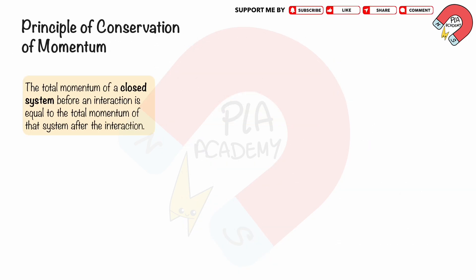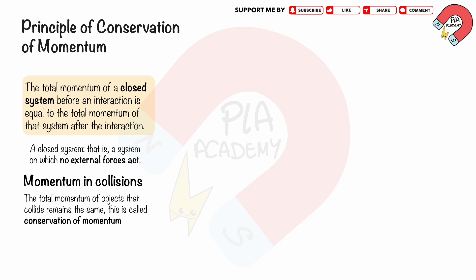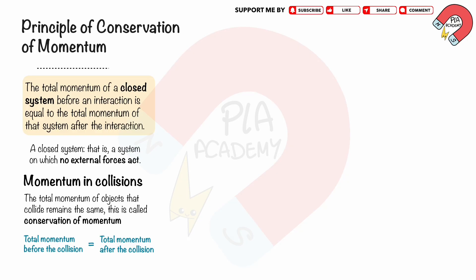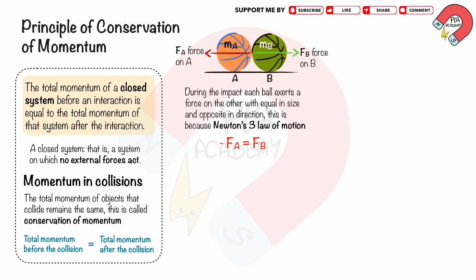The principle of conservation of momentum states that the total momentum of a closed system before an interaction is equal to the total momentum of that system after the interaction. A closed system is a system on which no external forces act. Momentum in collisions: the total momentum of objects that collide remains the same — this is called conservation of momentum. This means the total momentum before collision equals the total momentum after collision. When ball A with mass mA collides with ball B with mass mB, during the impact each ball exerts a force on the other equal in size and opposite in direction, because of Newton's third law about action and reaction.